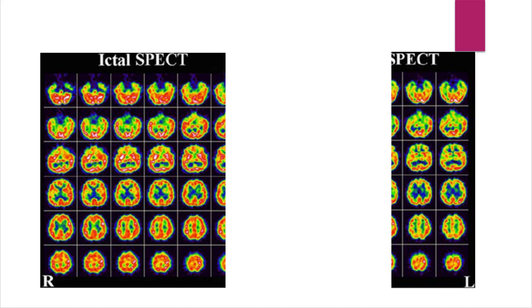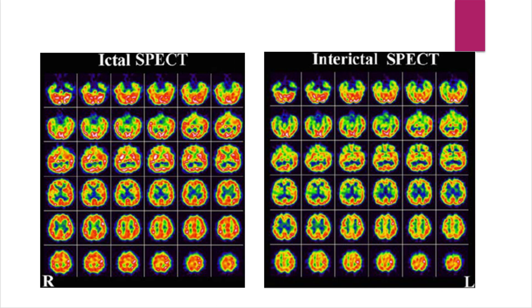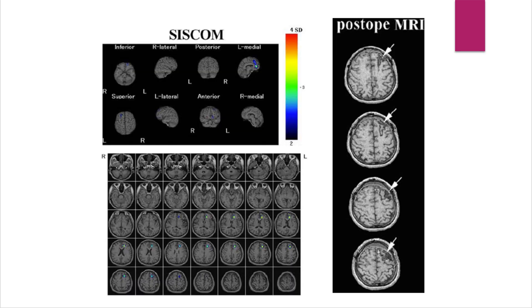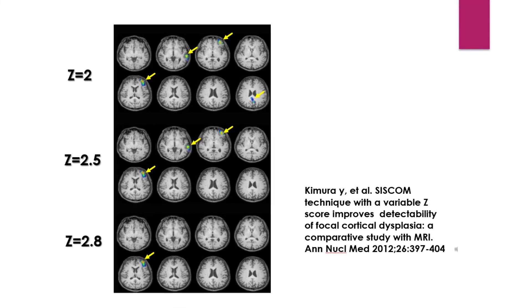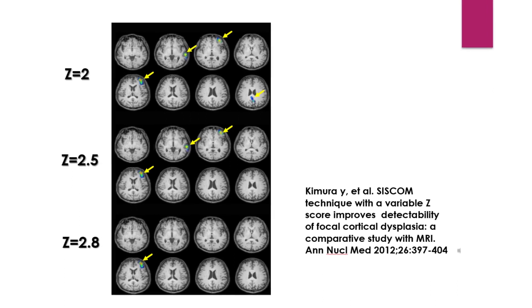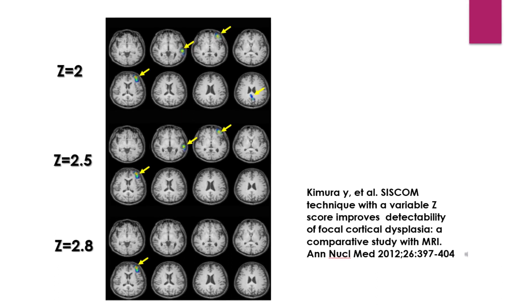In a case where SISCOM was useful in epilepsy focal resection, it was not clear where the focus was located when brain perfusion SPECT during ictal and interictal phases were shown side-by-side. SISCOM showed a statistically significant area of increased perfusion during seizures in the left frontal lobe, and resection of this area resulted in a favorable outcome. When multiple regions of increased perfusion are detected, we can narrow down candidates for the epileptic focus by increasing the threshold of the Z-score, which indicates statistical significance.